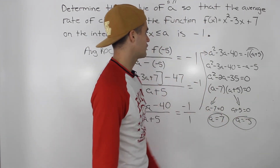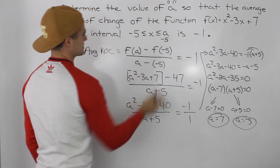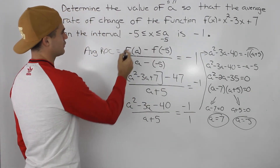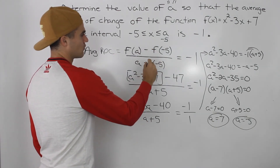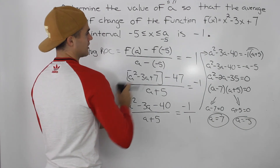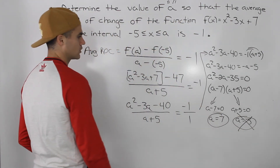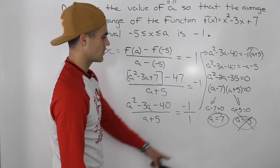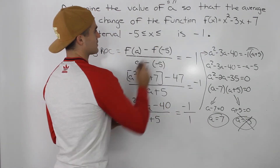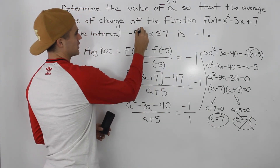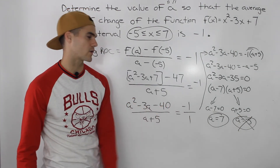Notice that the solution a = negative 5 is not going to work, because if we put negative 5 in for a, we'd have an interval from negative 5 to negative 5, which gives us 0 over 0 for the average rate of change — that's undefined. So the answer is a = 7, which gives us a valid interval from negative 5 to positive 7.